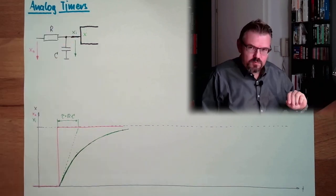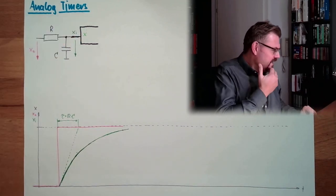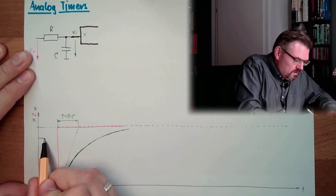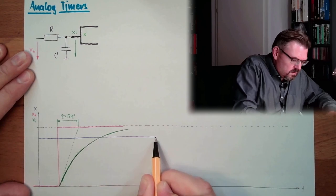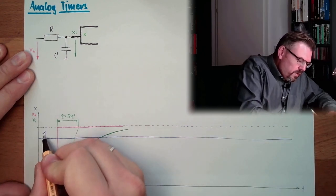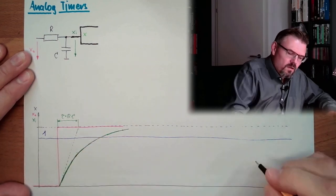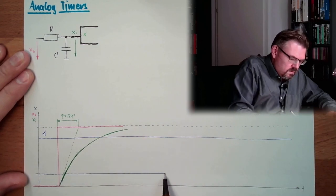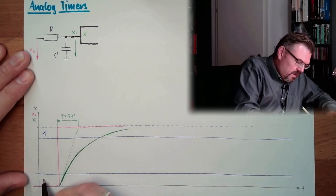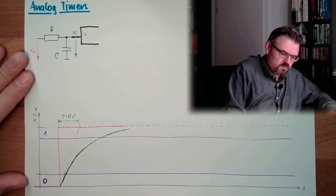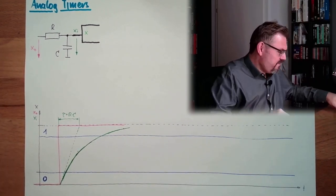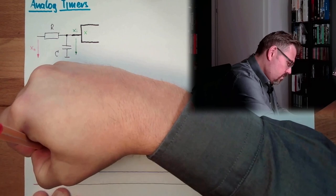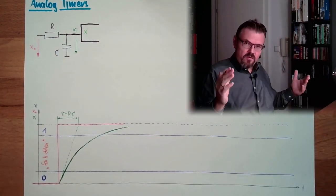And these inputs. I already mentioned it before at that point in time. We have here a guaranteed high level. Here the input will be guaranteed one. And here below a certain level, it will be guaranteed zero. Okay? And in between, we have the forbidden. Forbidden area. Why is that forbidden?